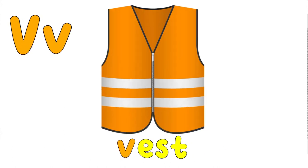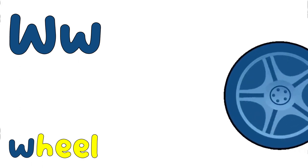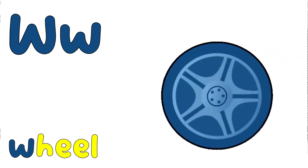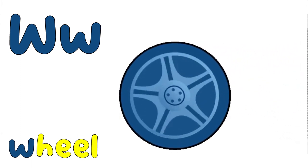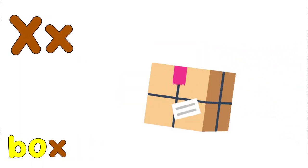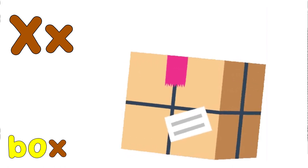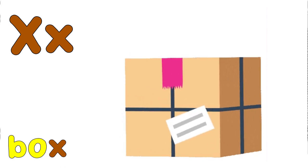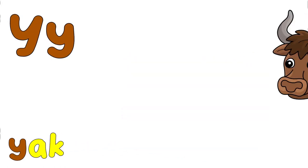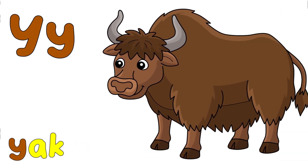V is for vest, v, v, v. W is for wheel, w, w, w. X as in box, x, x, x.